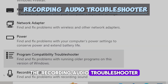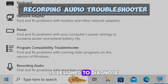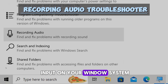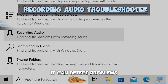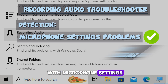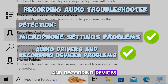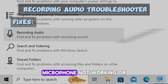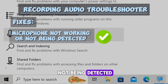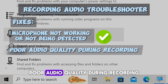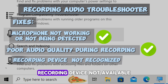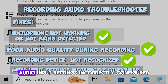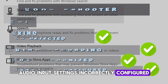The Recording Audio troubleshooter is designed to diagnose and resolve issues related to recording audio input on your Windows system. It can detect problems with microphone settings, audio drivers, and recording devices. Common issues it addresses include microphone not working or not being detected, poor audio quality during recording, recording device not available or not recognized, and audio input settings incorrectly configured.